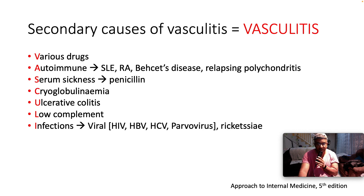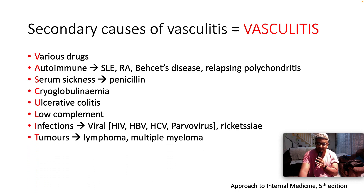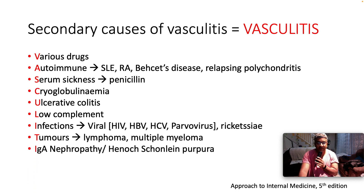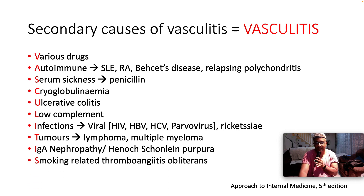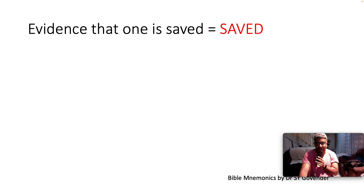I is infections, especially chronic viral infections — hepatitis B and hepatitis C are notorious for this, as are parvovirus, HIV, and rickettsia. T is tumors like lymphoma and multiple myeloma. I is immunoglobulin A nephropathy or Henoch-Schönlein purpura. S is smoking-related thromboangiitis obliterans. There you go — VASCULITIS is the acronym for causes of secondary vasculitic syndromes.